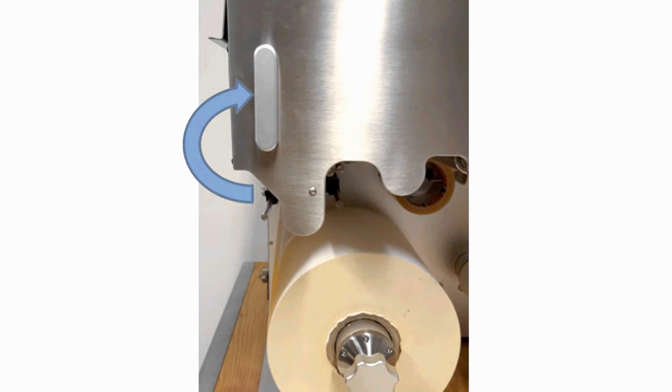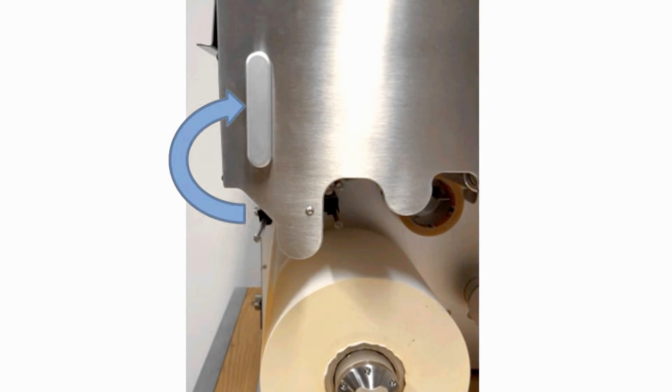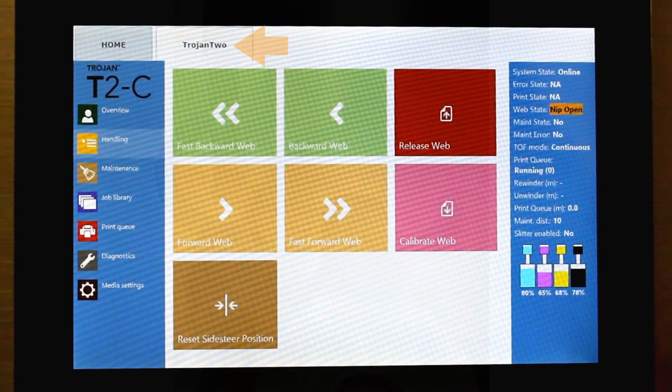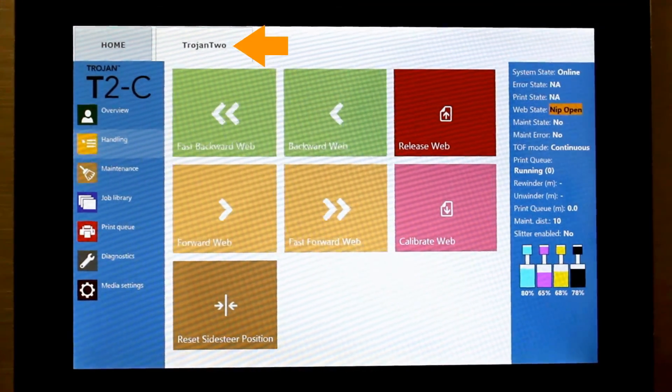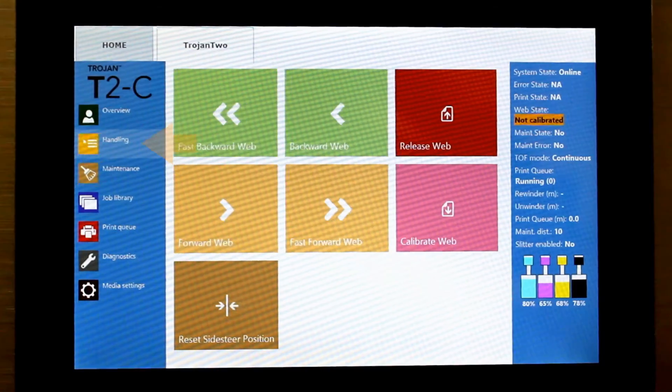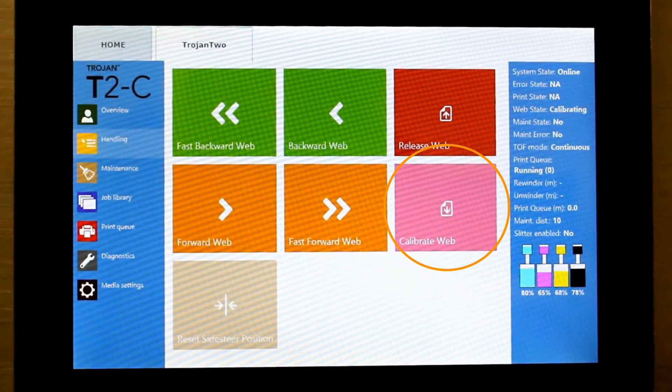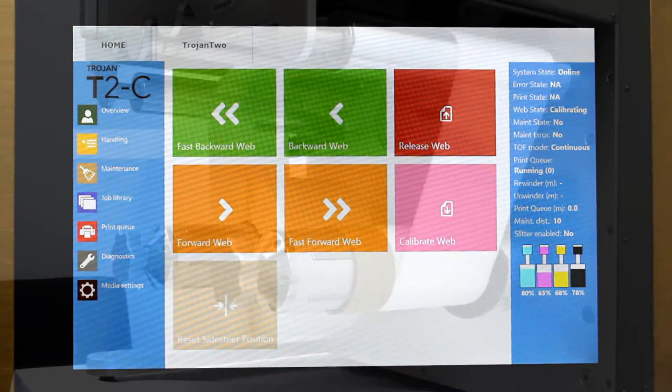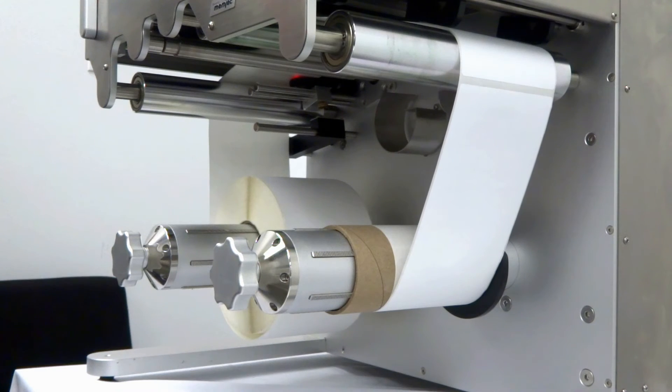Close the nip clamp by placing it into the upward position. Go to the Trojan 2 tab, then to Media Handling, and press Calibrate Web. The printer will then apply tension to the web.